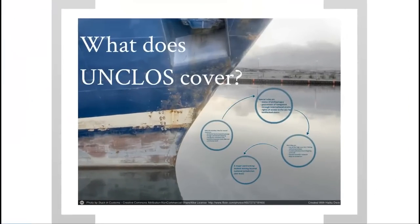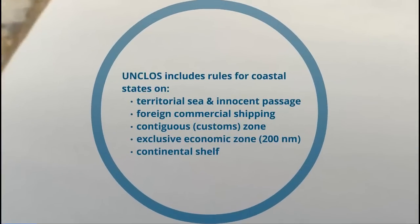What does the Convention on the Law of the Sea cover? It includes rules for coastal states on their rights in the territorial sea and innocent passage, rules governing foreign commercial shipping and their interactions with coastal states, the existence of a contiguous zone in which states can enforce their customs laws, an exclusive economic zone governing economic activities out to 200 nautical miles from shore, and rights in a continental shelf under the water column.